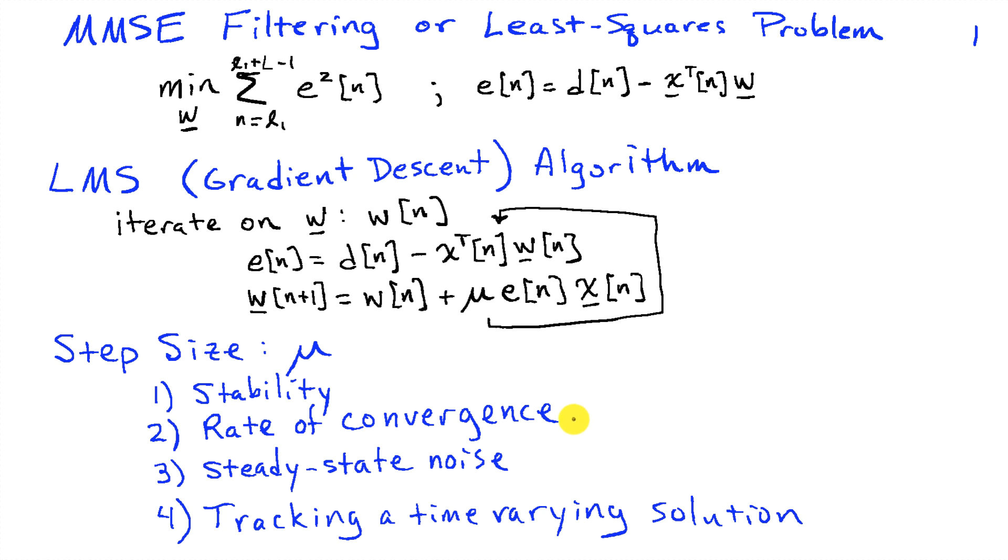We're going to get an intuitive feel for how mu affects the stability of this iteration, the rate of convergence for the weights, what I'm calling steady state noise or misadjustment, and then we'll look at how the step size affects tracking a time varying solution.